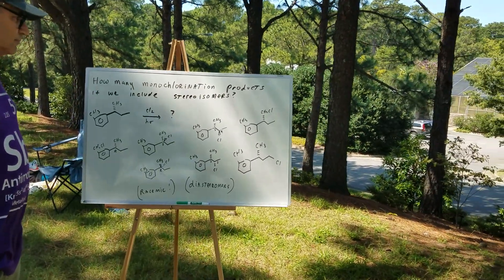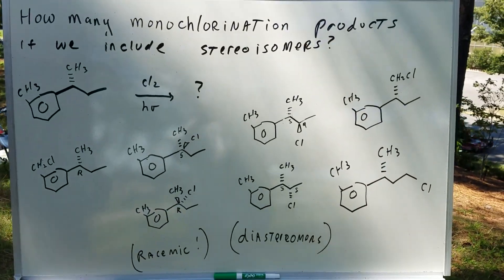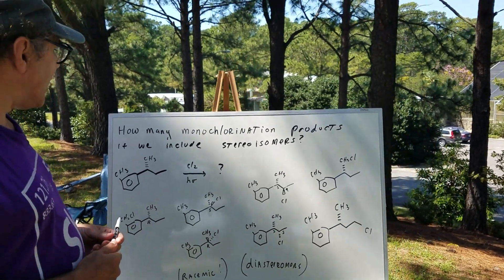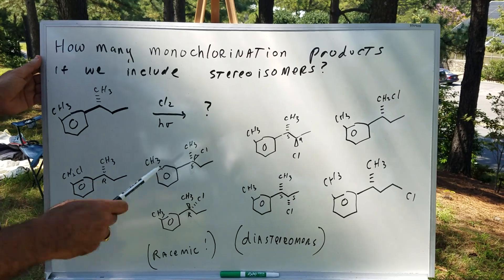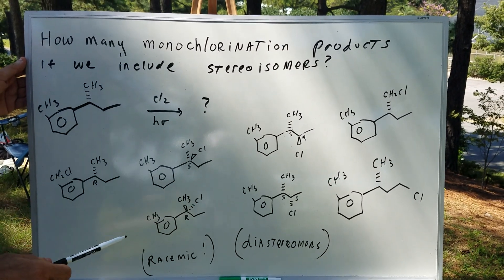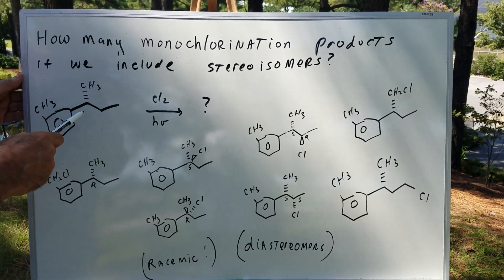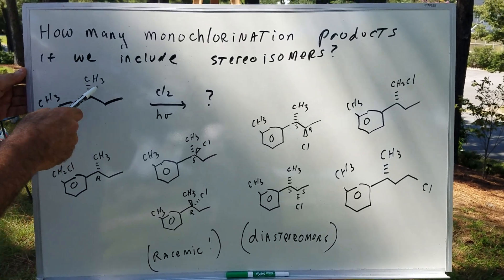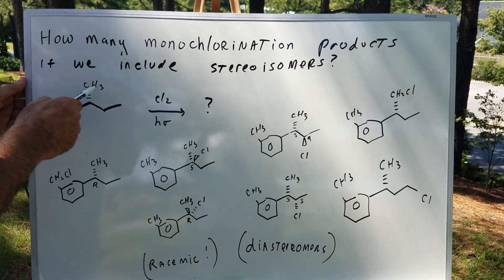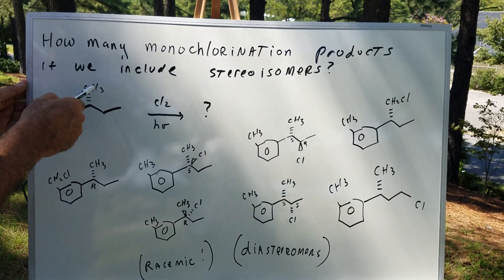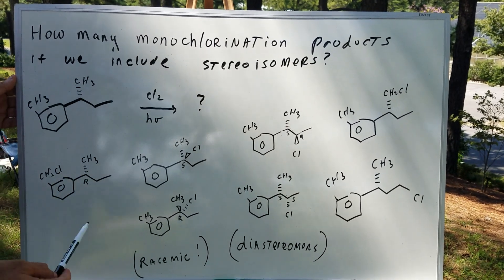I'll get up on the problem so you can take a look at it for a minute before we get started. What we want to do is to look at how many monochlorination products — including stereoisomers — for this reaction. Whenever we have chlorine, any carbon that has hydrogens off of the benzene ring can be substituted with a chlorine. So any of these hydrogens can be substituted with a chlorine — these hydrogens, this one, this one, or this one.